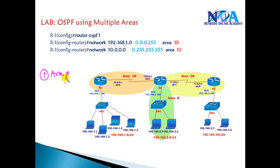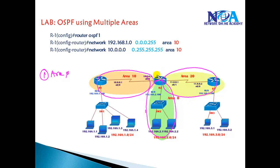We need to follow the rules. Area 0 should be the transit area. Here I'm using area 0 connecting to area 10 and area 20, and this is my Area Border Router connecting area 10 and area 20. Area 0 is the transit area because traffic from area 10 to area 20 goes via the area 0 router — that's Router 2.